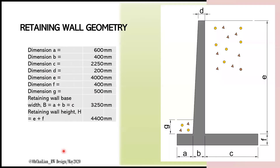Provided also is the geometry of the retaining wall with dimensions A, B, C, D, E, F, G, and the retaining width B, and retaining wall height H.